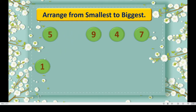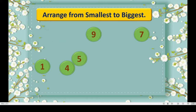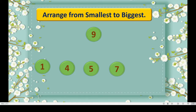This is 1. You know this is the smallest number among the given numbers. After 1, 4 is the smaller one. Then comes 5, a little bigger one. Then 7. The last and biggest one is 9. So we arrange the given numbers from smallest, that is 1, to the biggest, that is 9.